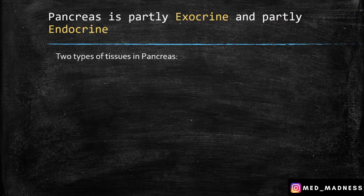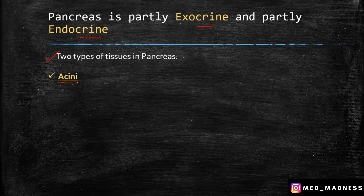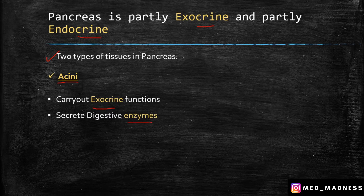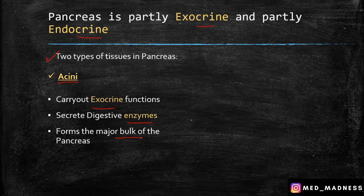Pancreas is partly endocrine and partly exocrine. There are two types of tissues in the pancreas. One is the acini. This acini will carry out the exocrine functions and it secretes digestive enzymes and it forms the major bulk of the pancreas.